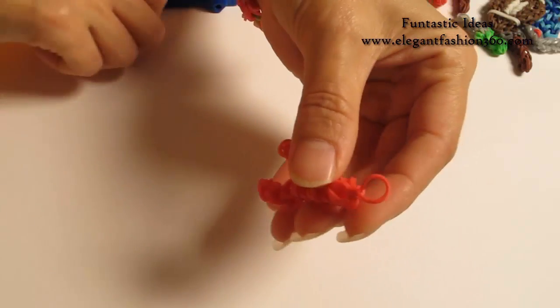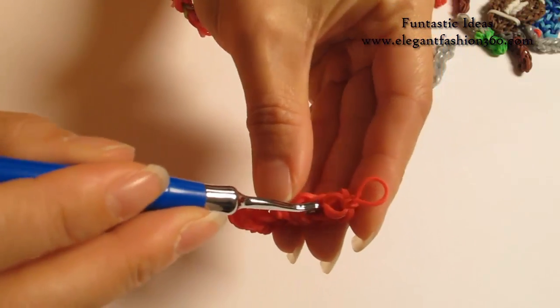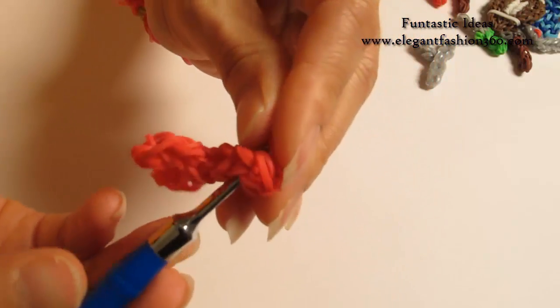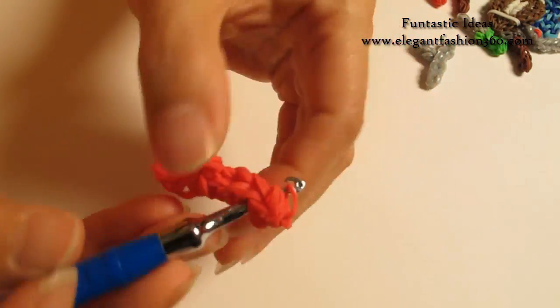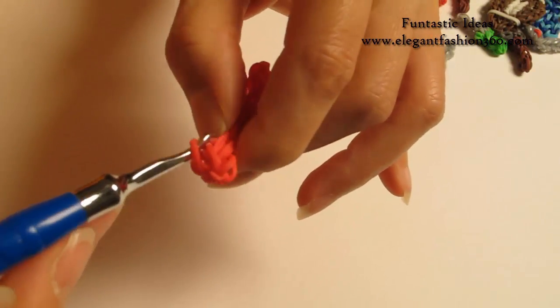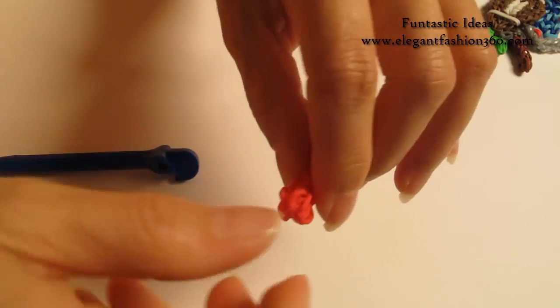And if you wanted to hide this secure band, just come over here. Put your hook through some of the band close by. Put your secure band on your hook. And just grab it through. So you will hide it.